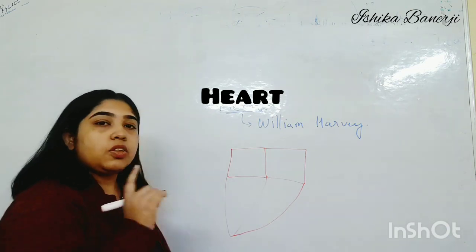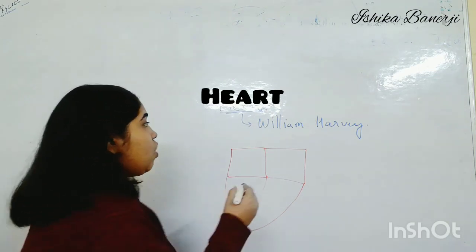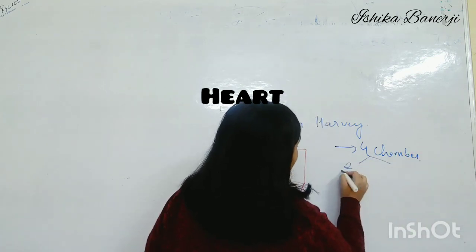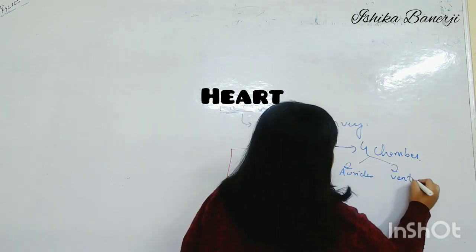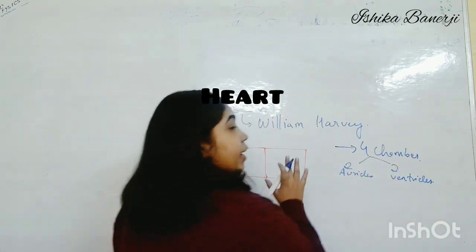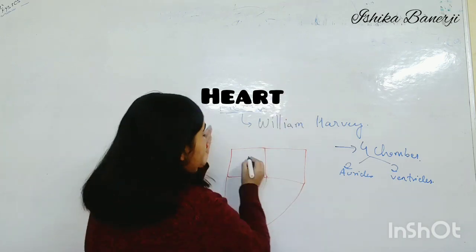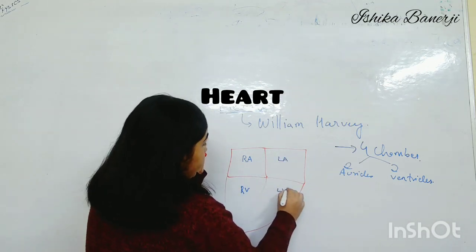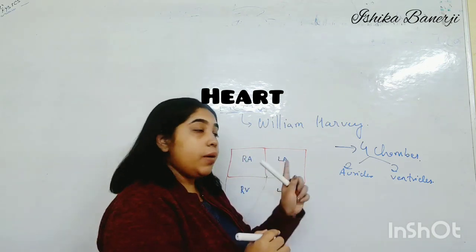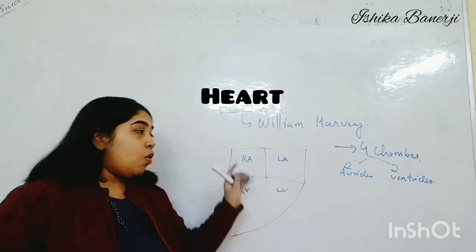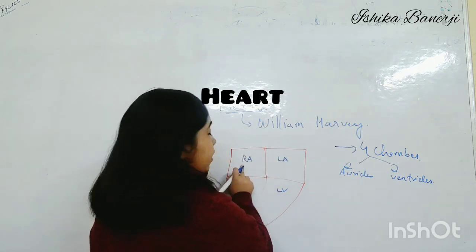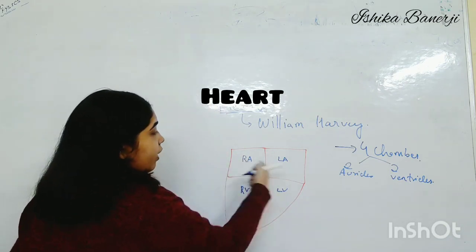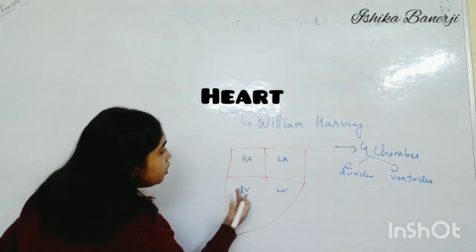The heart has four chambers. The four chambers are divided into two auricles and two ventricles. If you look from my side, your left side will be the right auricle and below it the right ventricle. On the other side are the left auricle and left ventricle. The upper two chambers are the auricles and the lower two are the ventricles.